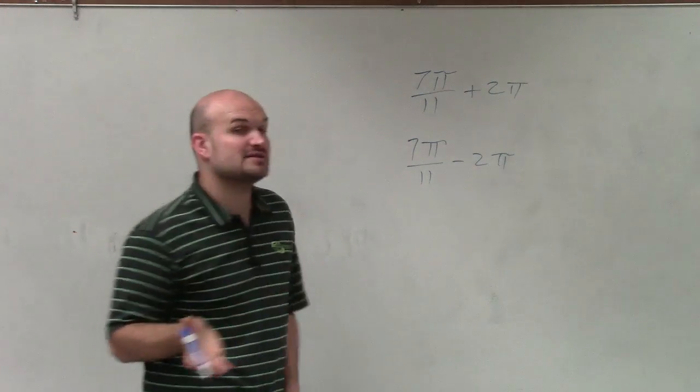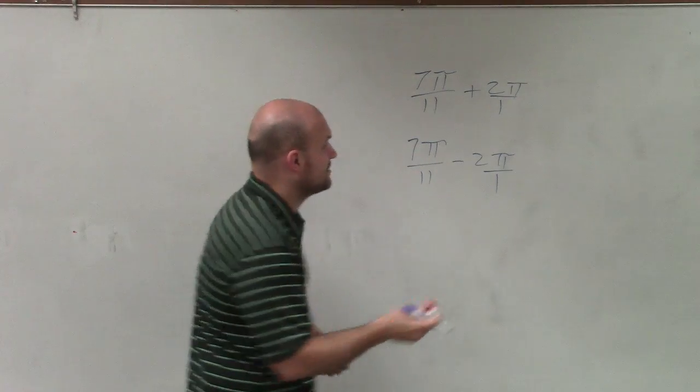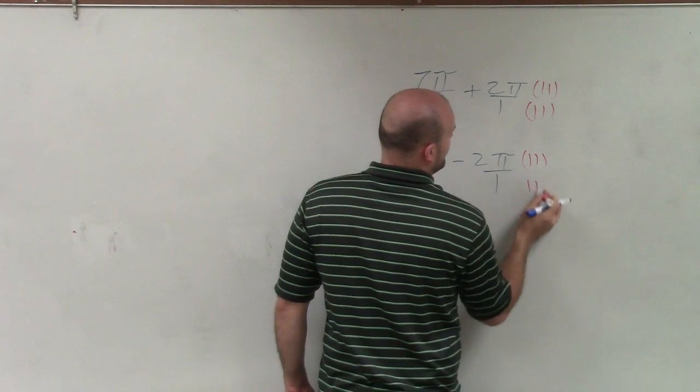So the first thing I need to do is make sure they have common denominators. These both have denominators of 11, so to do that, I'm going to multiply here by 11 over 11 and this one by 11 over 11.